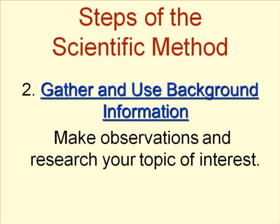Step two is to gather and use background information. This is important because professional scientists working on a problem are often under a time constraint and want to solve it as quickly as possible. They'll gather as much information as they can about their subject — this saves time and money. If another scientist has already done the same experiment and found it doesn't work, you don't have to repeat it. Think about finding a cure for cancer: we don't want all scientists doing the same failing experiments. They need to share information so they can say 'this doesn't work, let's try something else.' That's why gathering background information is so important.